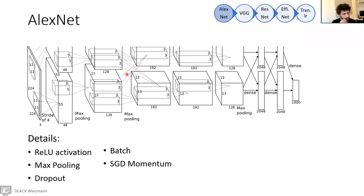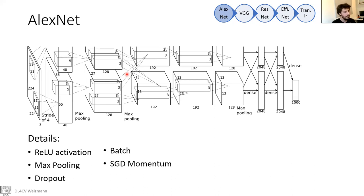A question: can you remind why max pooling increases the number of channels? The max pooling doesn't increase the number of channels — max pooling reduces the spatial dimension, and the convolutional layers increase the number of channels. So there is a max pooling and conv layer that reduce the resolution and increase the number of channels. The transition from a 27×27×128 block to the next one is both the convolution and the max pooling together. In general, the convolution comes after the pooling.